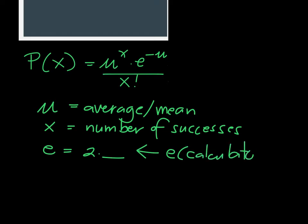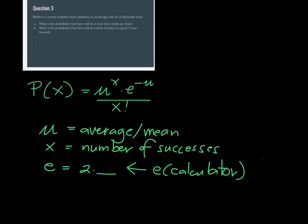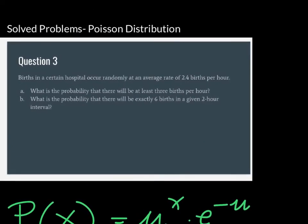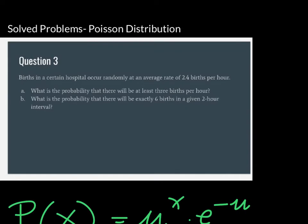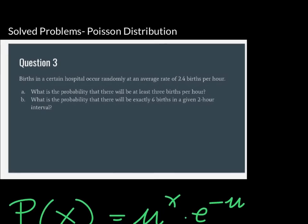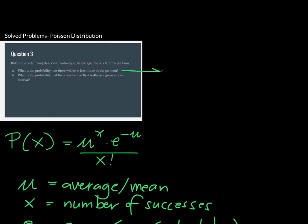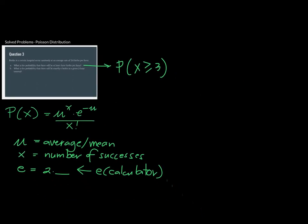Let's look at problem A: what is the probability that there will be at least three births per hour? It is essential that you know how to write this in terms of a probability symbol. Having at least three births per hour means x is greater than or equal to three. So what you want to do is find the probability starting at three and going upward.